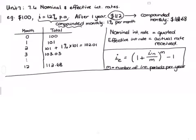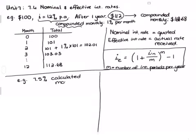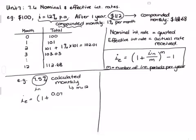Let's do two examples. First: 7.5% per annum compounded monthly. Since it's monthly, m equals 12. This is your nominal rate (i-n). So your effective rate (i-e) equals one plus 7.5% — or 0.075 as a decimal — divided by 12, to the power of 12, minus one.